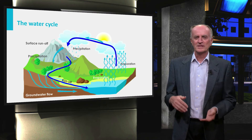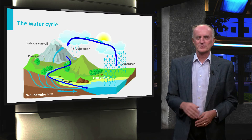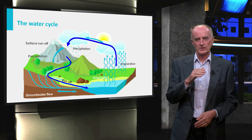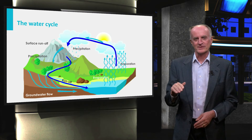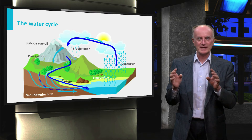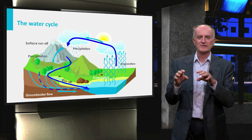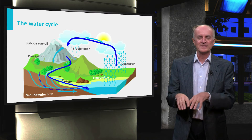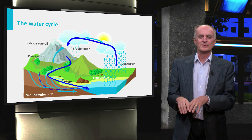We have looked in previous modules at the water flowing on the surface of the earth. It is now time to start looking at what happens to the water infiltrating the outer part of the earth.